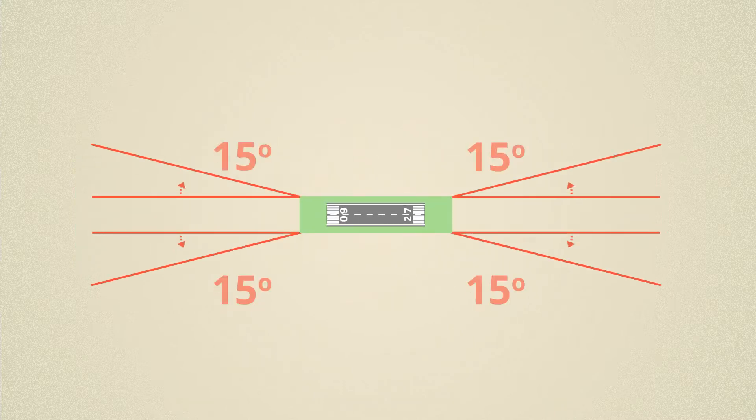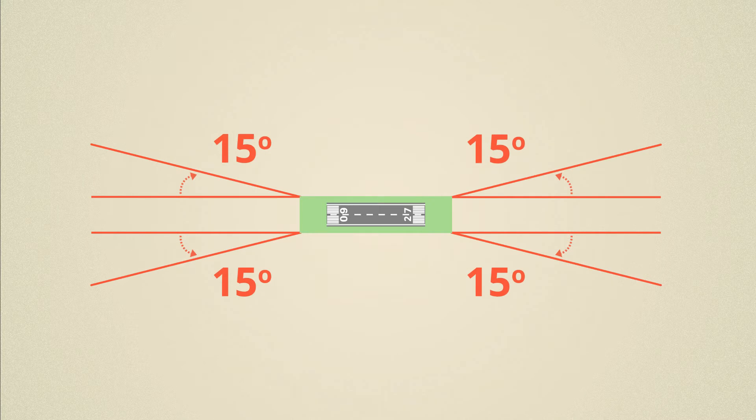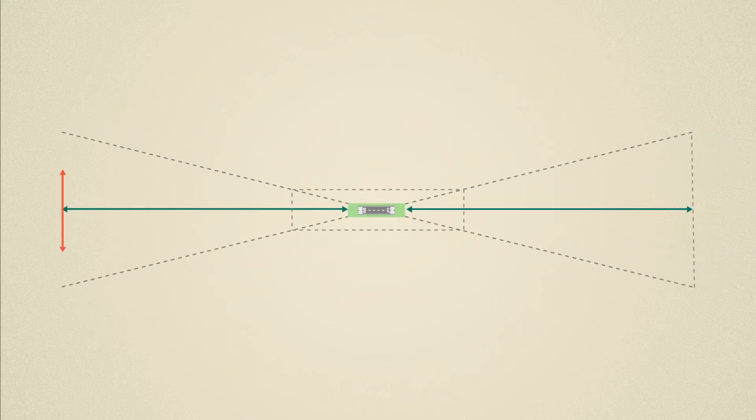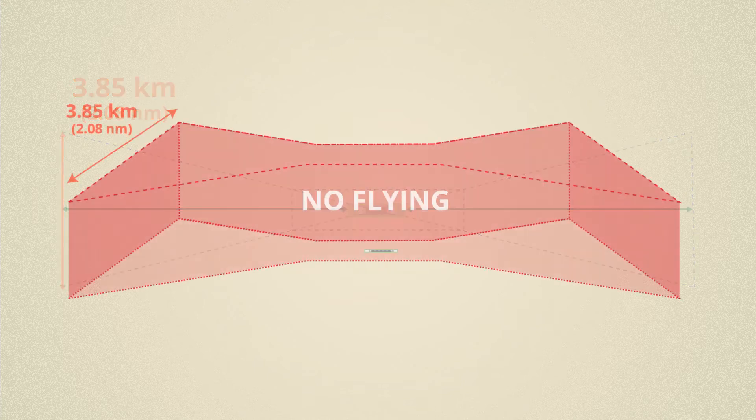The departure and approach is defined as a splay of 15 degrees either side of the runway strip out to a distance of seven kilometres for non-controlled aerodromes. The width of the corridor at seven kilometres reaches 3.85 kilometres in width.